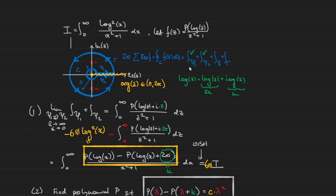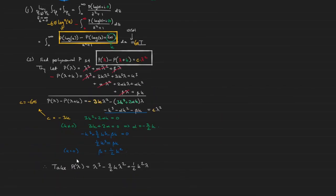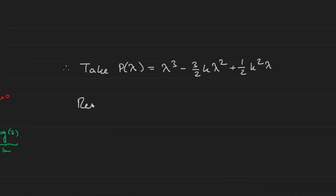So far we've evaluated the ψ₁ and ψ₂ integrals — both together give −6πi times the integral I we want. I'm not going to evaluate the integrals over the big Γ and little γ paths — I'll leave those as an exercise, as they go to zero in the limit anyway. Now what's left is to evaluate the sum of residues. Let's bring up our function and calculate the residues at z = ±i.